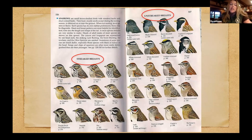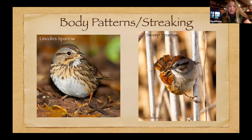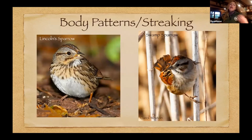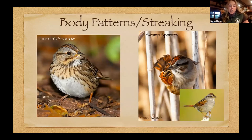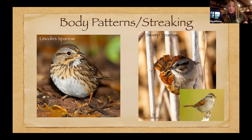Let's look at body patterns and streaking. The Lincoln sparrow on the left has a lot of fine streaking, whereas the swamp sparrow has coarse or absent streaking. These two species occupy fairly similar habitat — both are lovers of wetlands — and when you see them skulking around in wetlands displaying secretive behavior, you'll get a quick look and you want to note these markings fast. The streaking is one of the main differences between these two species.